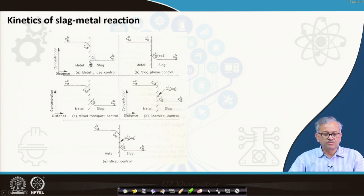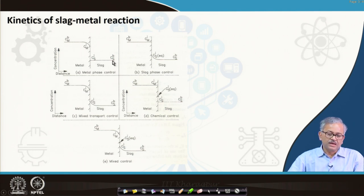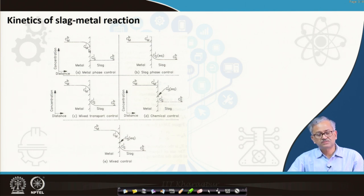The chemical reaction at the surface is very fast, so complete partitioning of the impurity has taken place at the interface. CSI is the concentration on the slag side at the interface, CMI is the concentration on the metal side at the interface, CSB is the bulk slag concentration, and CMB is the bulk metal concentration. The only resistance lies in the concentration boundary layer on the metal phase.